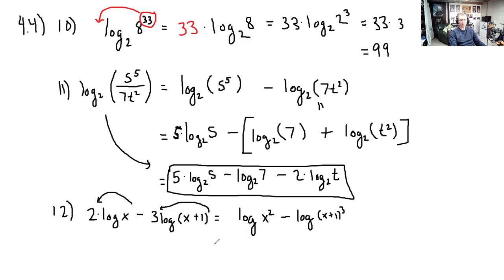The next and final step is just the reverse of what we saw up here in this step. We took a logarithm of a quotient and wrote it as a difference of logarithms. So here we see a difference of logarithms, and we can rewrite that as a single logarithm of a quotient.